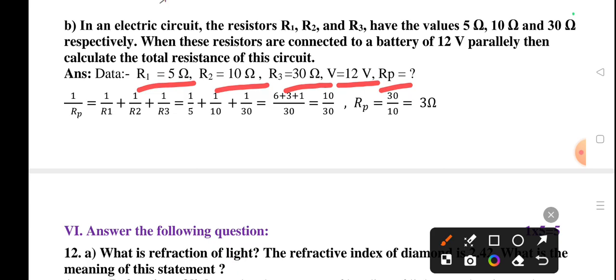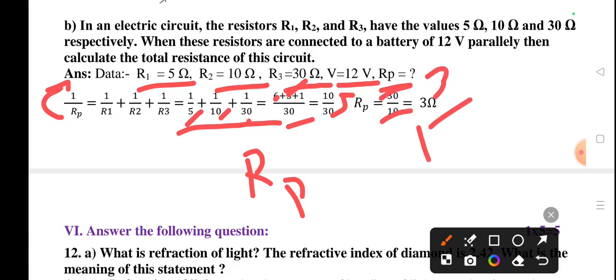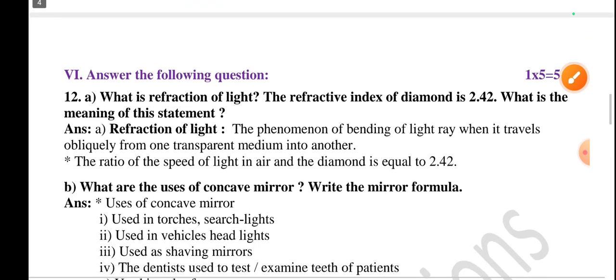The resistors are connected in parallel, so the formula is 1 by Rp equals 1 by R1 plus 1 by R2 plus 1 by R3. That's 1 by 5 plus 1 by 10 plus 1 by 30. The LCM of 5, 10, 30 is 30. So 6 plus 3 plus 1 over 30 equals 10 by 30. Whenever we make the reciprocal, 1 by Rp becomes Rp, so numerator goes to denominator and denominator goes to numerator. So 30 goes up and 10 comes down, giving 3 ohm. The answer is 3 ohm.